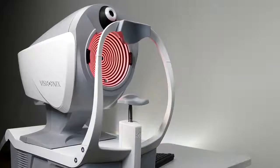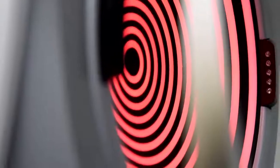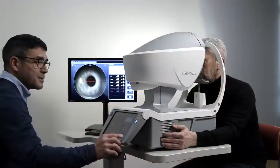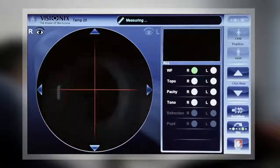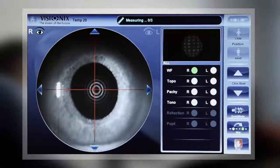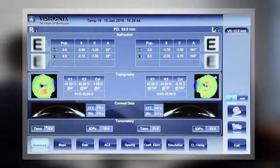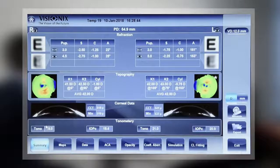You can use this machine to perform either complete examinations of the anterior segment of the eye or specific examinations. When measuring is started, the device's automatic functions—autofocus and auto tracking—will self-activate.